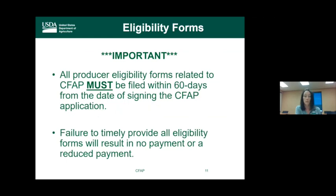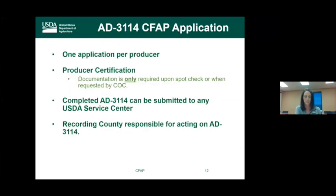Producers file one application per producer covering all production for all eligible commodities across all counties. It is a certification — production evidence documentation will not be accepted at this time and will only be required if selected for spot check or when the county committee requests it. The completed CFAP application can be submitted to any service center, but the producer's control county will approve it.